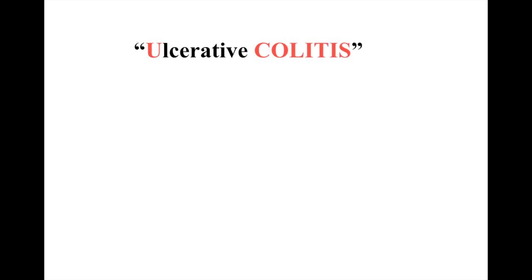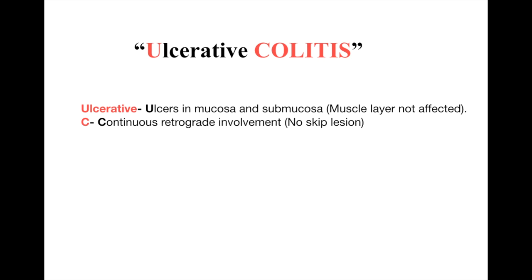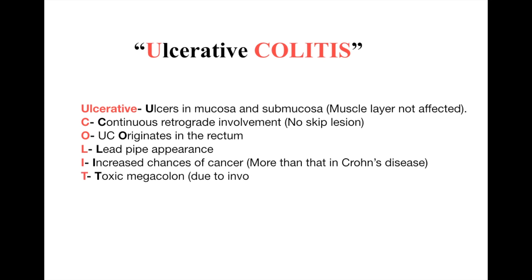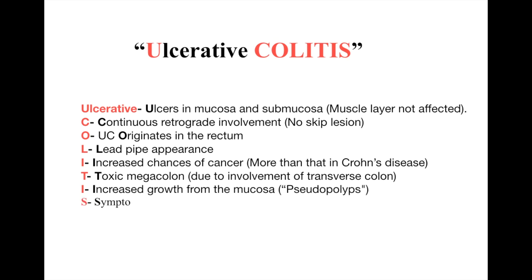The mnemonic for ulcerative colitis is 'ULCERATIVE COLITIS': U for ulceration in the mucosal and submucosal area; C for continuous retrograde involvement with no skip lesions; O for originating in the rectum; L for lead pipe appearance; I for increased chances of cancer, more than Crohn's disease; T for toxic megacolon; I for increased growth from the mucosa, which refers to pseudopolyps; S for symptoms that are severe compared to Crohn's disease.